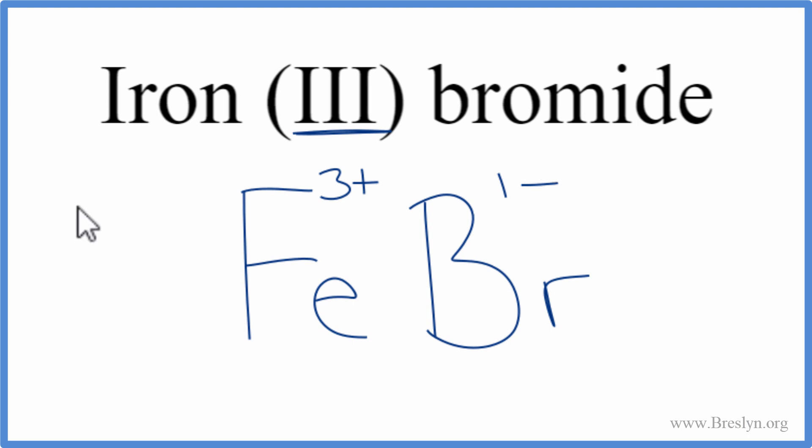We use something called the crisscross method. We'll move the 1 down here and the 3 over here. We don't write the 1. That's the formula for iron (III) bromide.